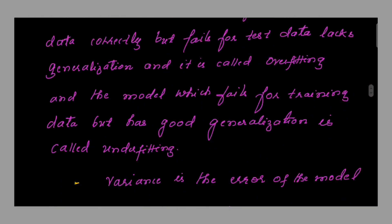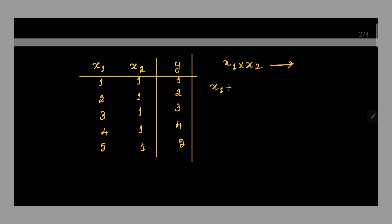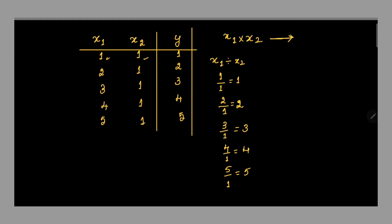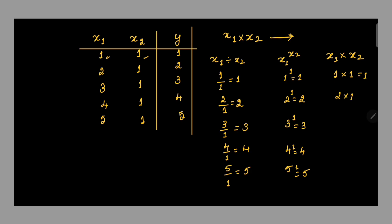Let me show you with the example. The first function we expect is x1 × x2. There is also a second applicable function: x1 / x2 — for example, 1/1 = 1. A third function is x1^x2; if x1=1 and x2=1, output is 1; if x1=2 and x2=1, output is 2. All three functions produce outputs 1, 2, 3, 4, 5. This is called an ill-posed problem.